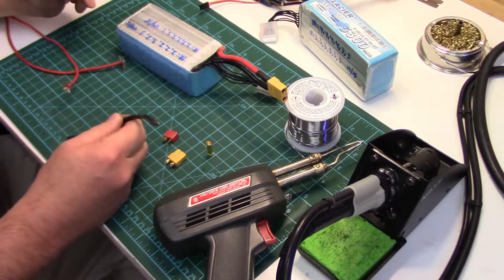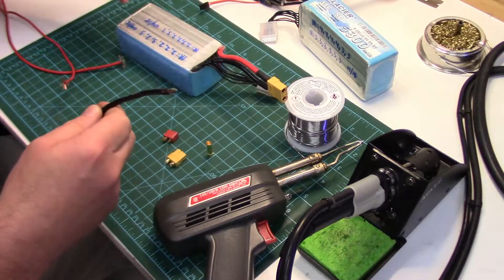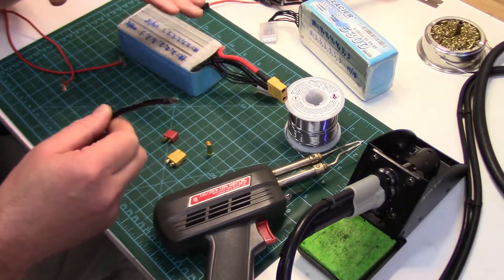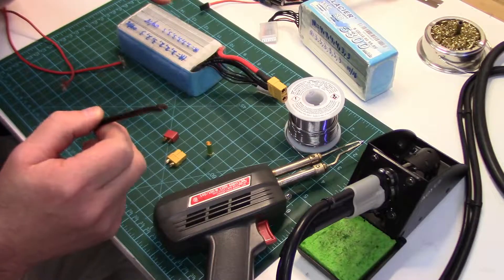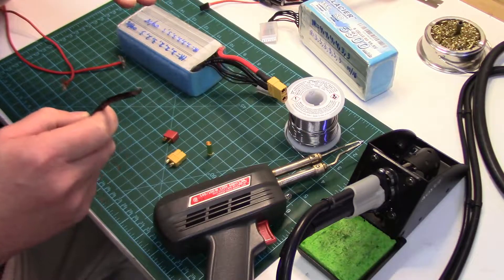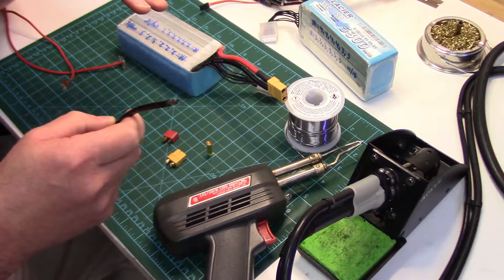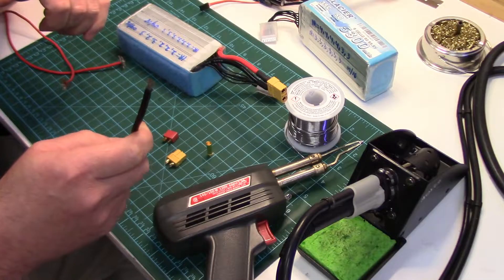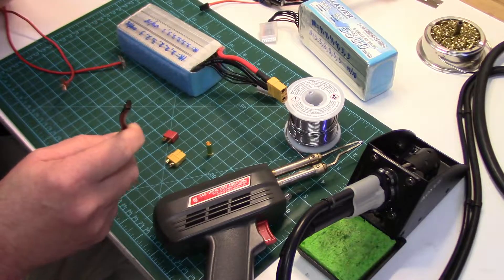Today we're going to be going over tinning and what it is, why it's so important. Out of all the videos here, this is pretty much the most important skill to learn is proper tinning, because it's really 75% of an RC connector soldering job. If you don't have your tinning right, you're going to have a compromised connection on your connector.